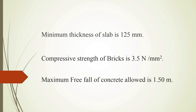The minimum thickness of slab is 125 mm, because thickness is important during slab construction. The compressive strength of brick is 3.5 Newton per mm square. This is very useful for civil site engineers, because the site engineer uses this when calculating the quantity of bricks required in walls.